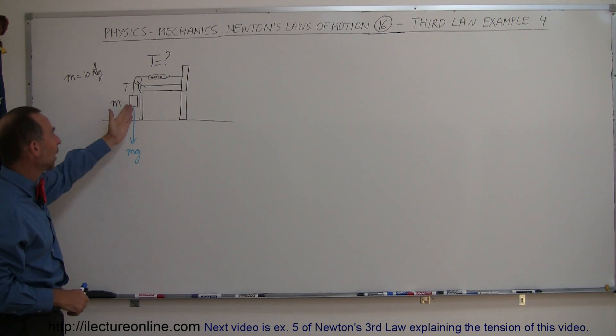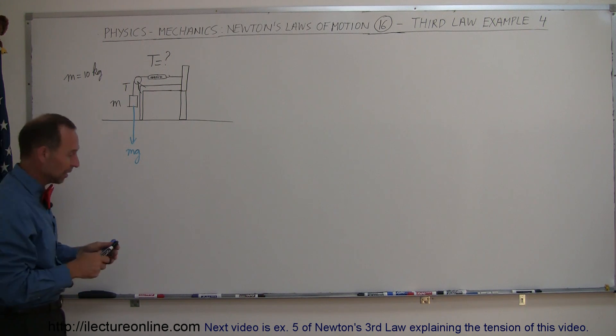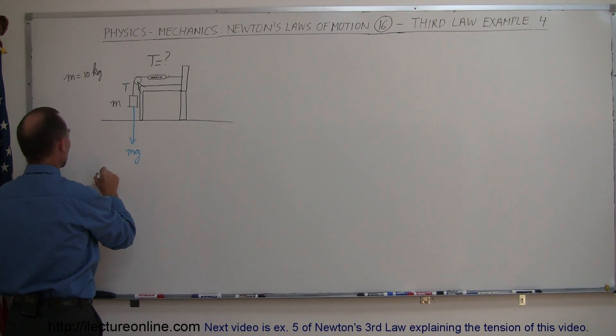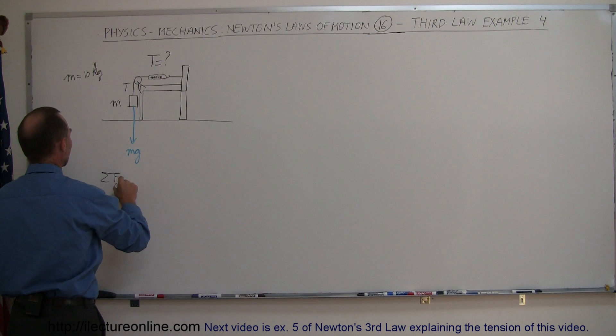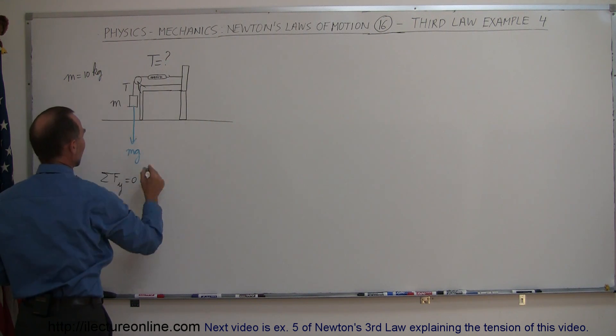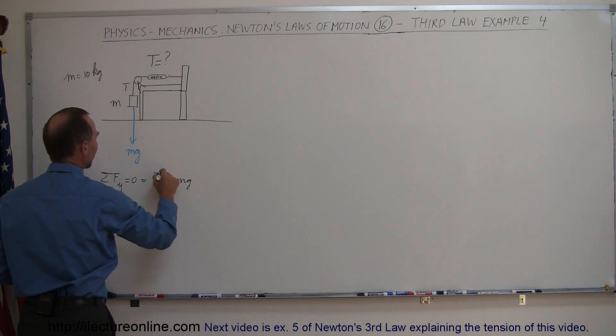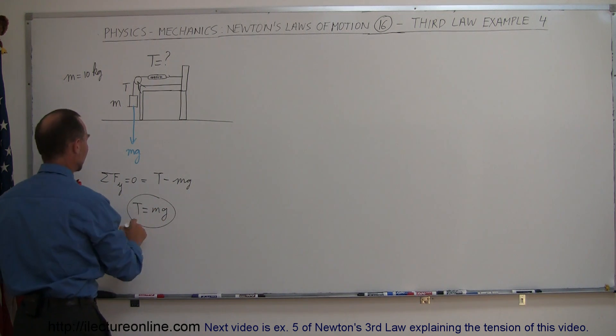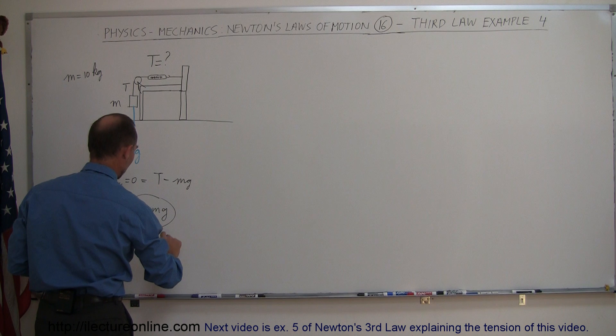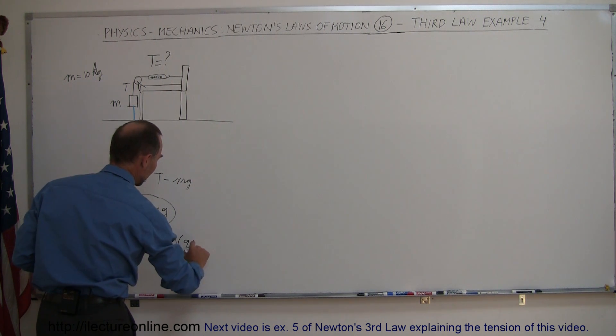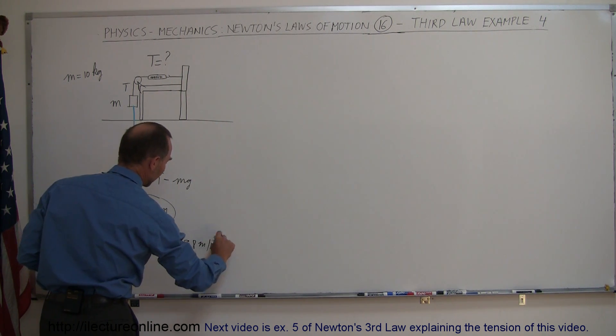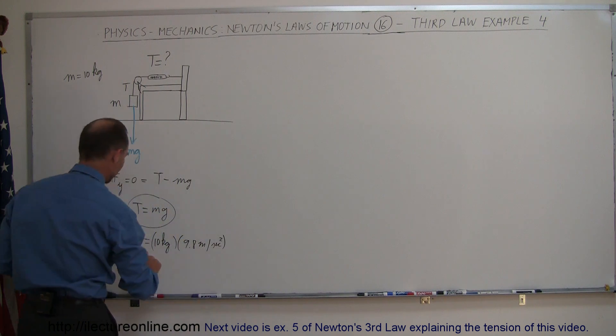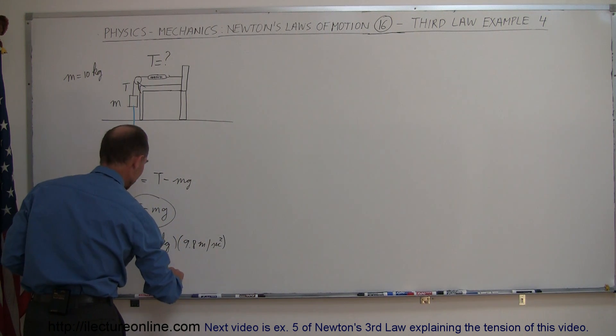That means that the net forces in the y-direction must equal zero. We can say that the sum of the forces in the y-direction add up to zero, so we have a positive tension and a negative mg. When we add them up, we get zero, which means that the tension is equal to the weight of this mass. In this case, this is equal to 10 kilograms times 9.8 meters per second squared for the acceleration due to gravity, and of course that gives the tension of 98 newtons.